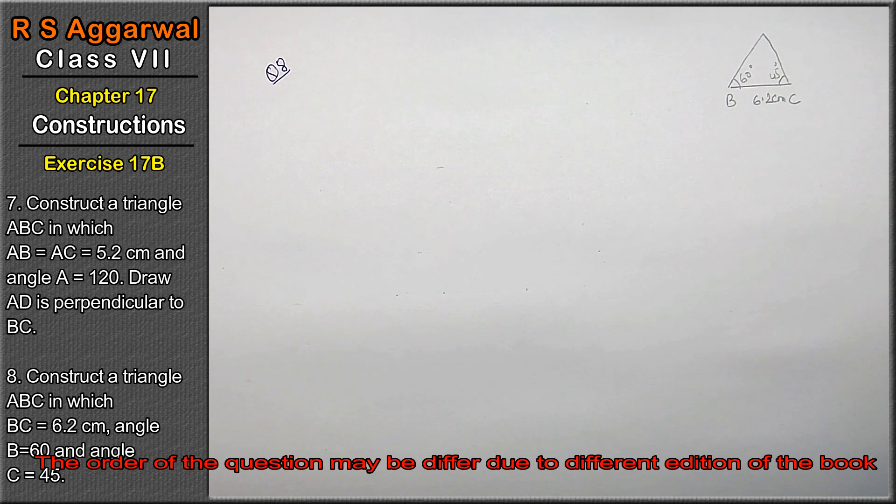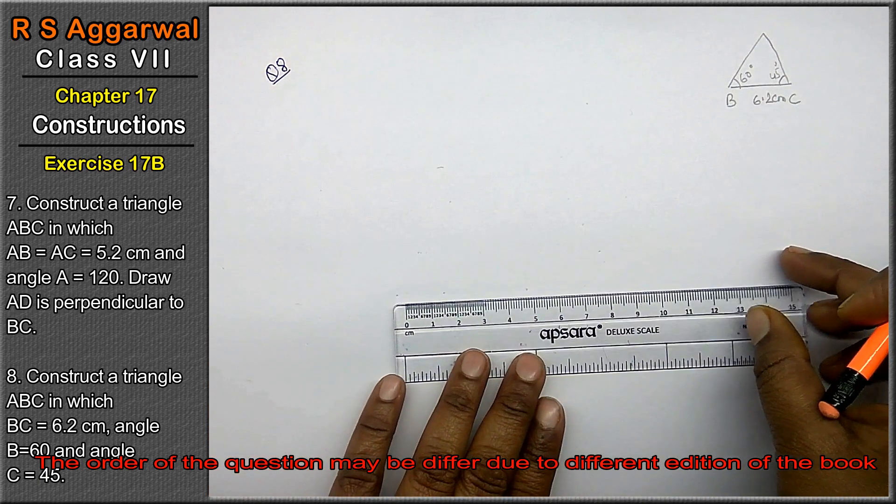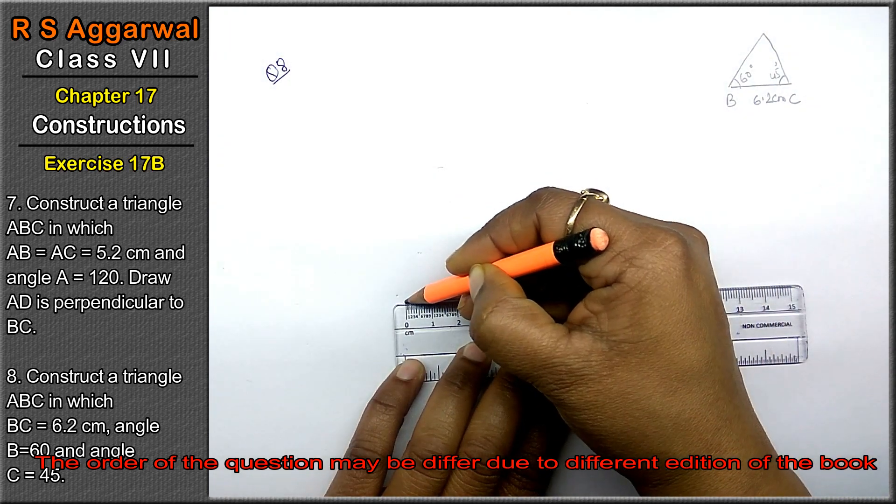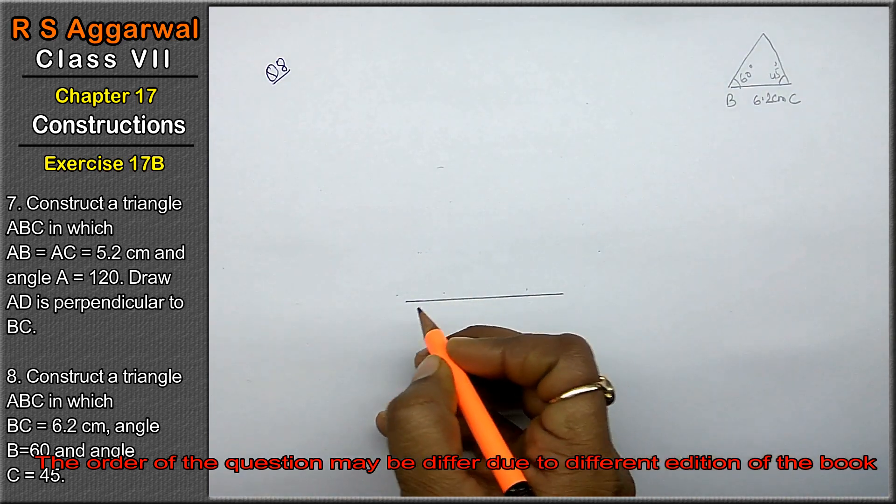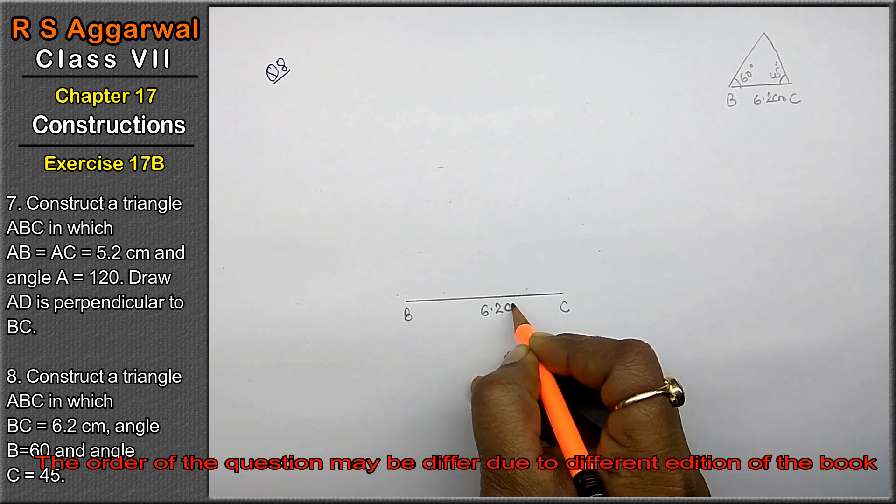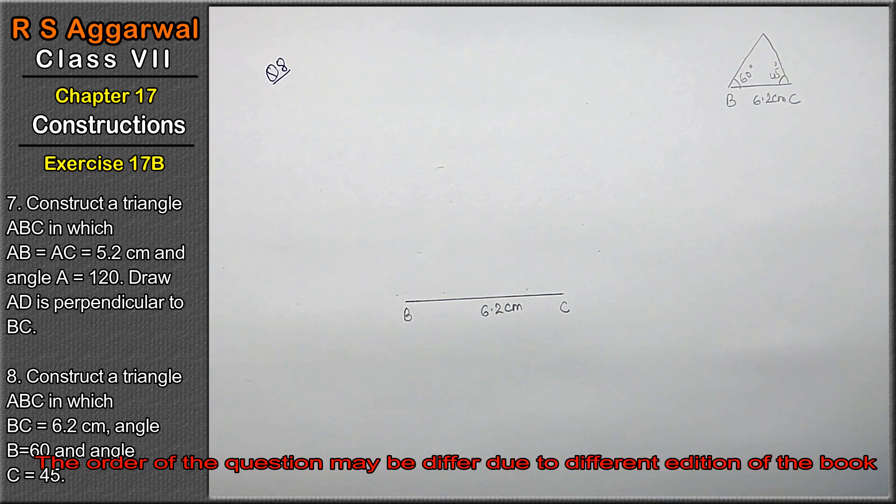We will make a line BC which is 6.2 cm. That is our point B, BC is 6.2 cm. Now, we have angle B at vertex.